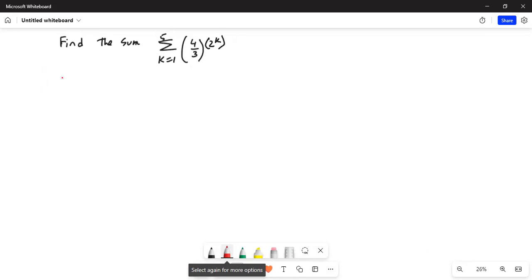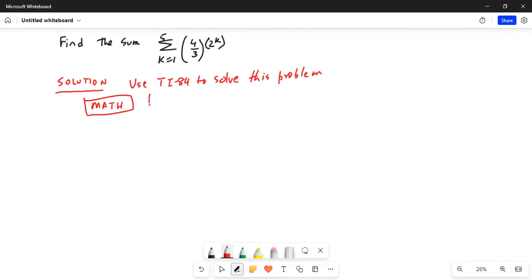Solution: Use TI-84 to solve this problem. First press the math button, put the calculator on, press the math button, then scroll down to summation. 0 is summation. And enter.